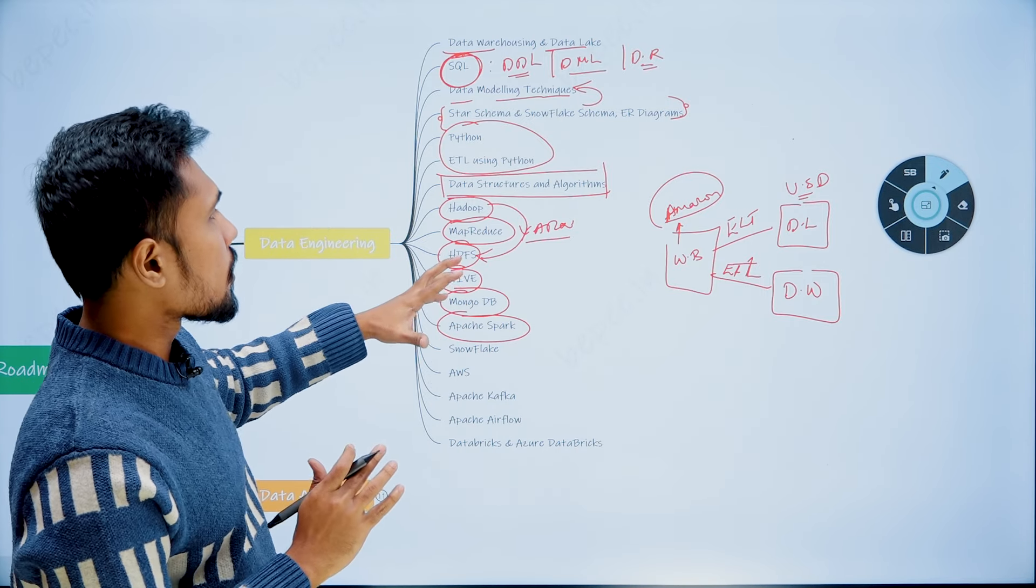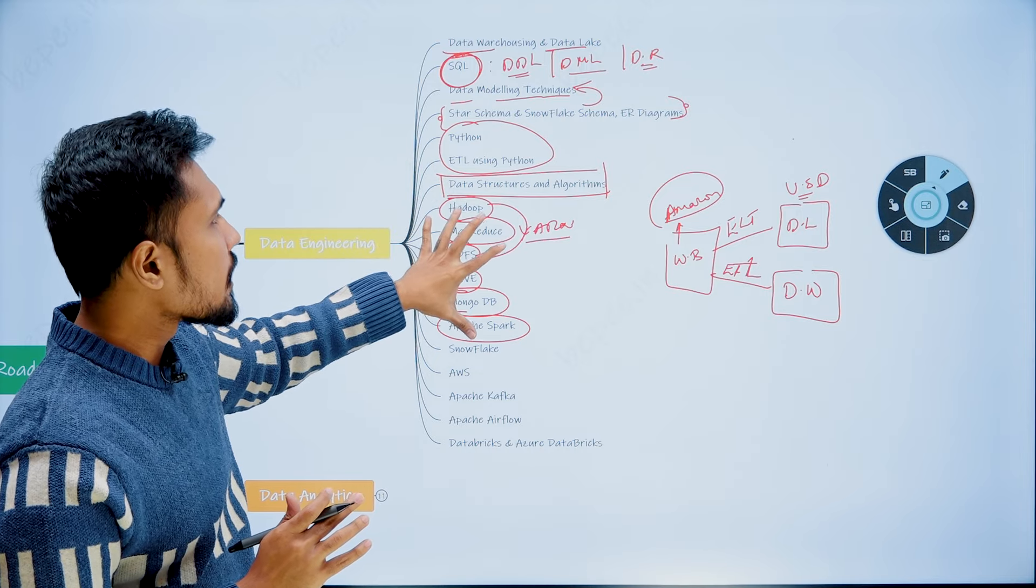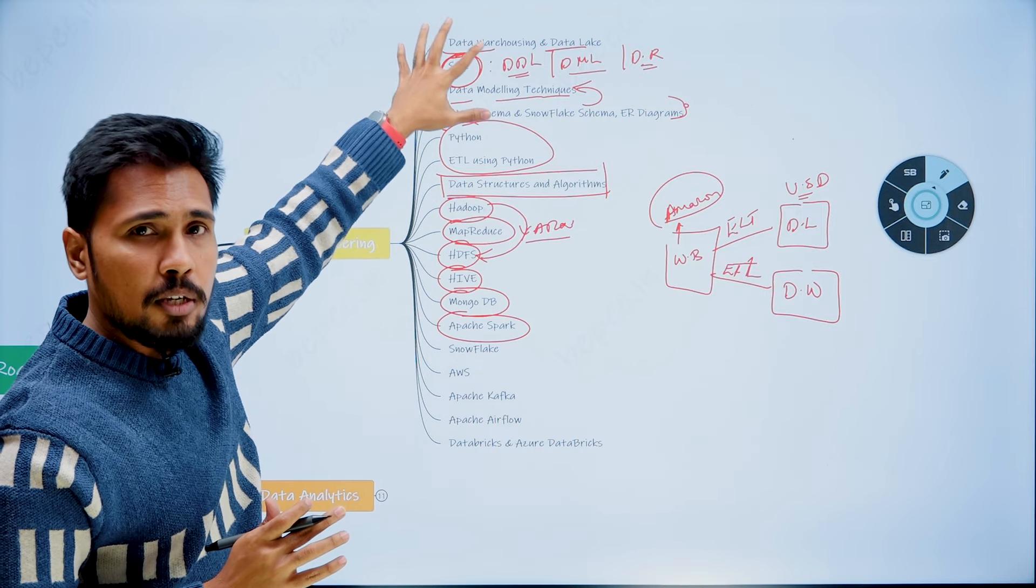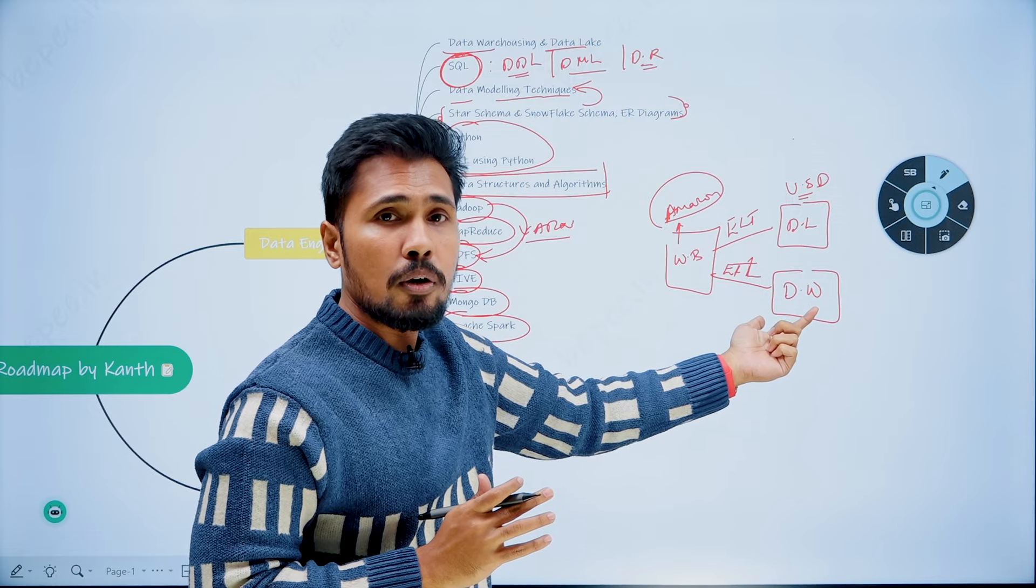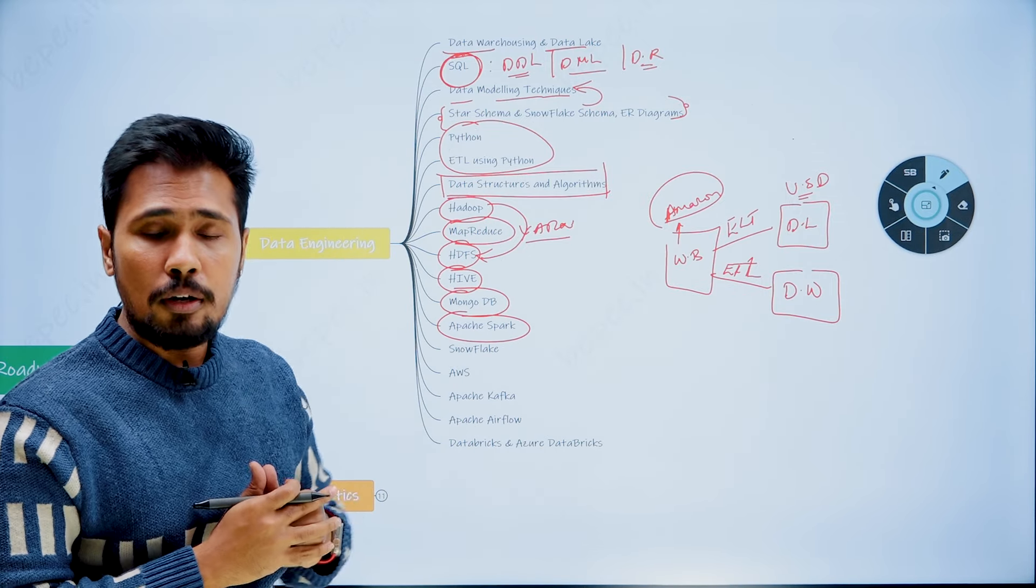Now these skill sets are important. One, you are learning a big data skill set. One, you are learning the basic pillars where you can do data lake operation, data warehousing operations, and you are able to perform your ETL operations.